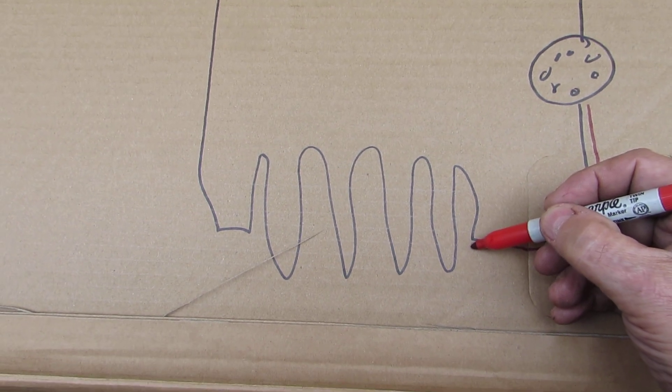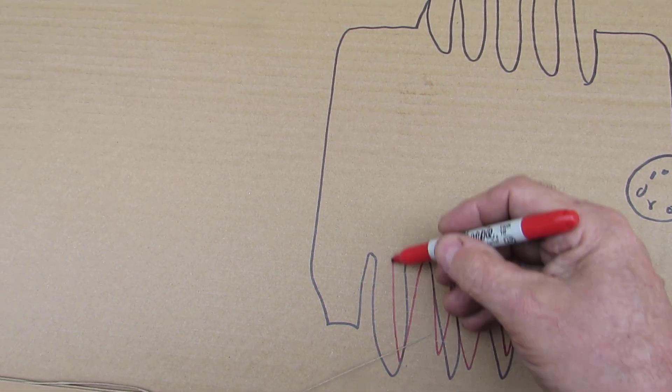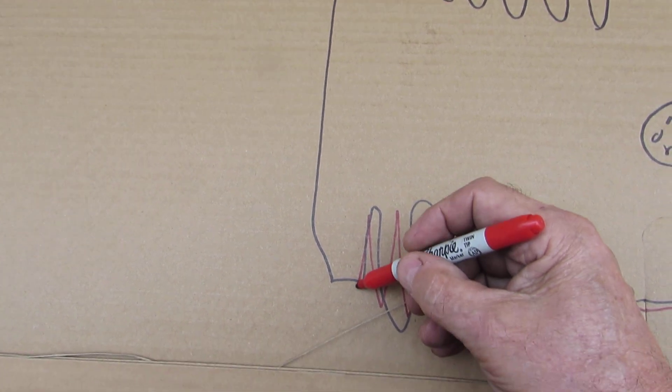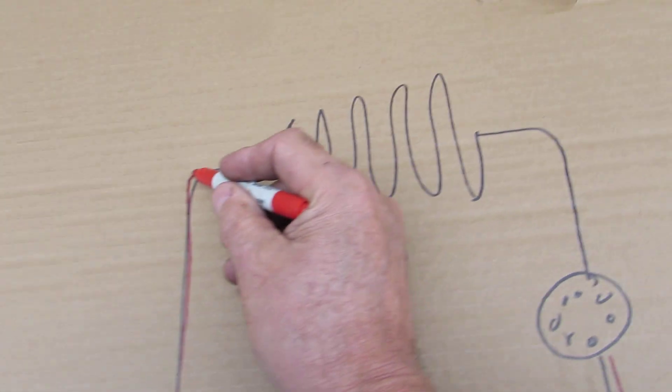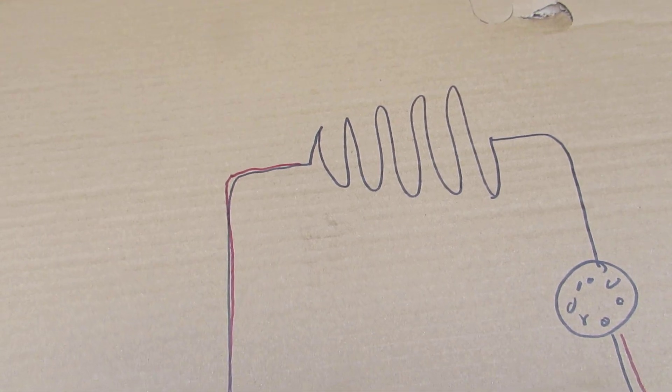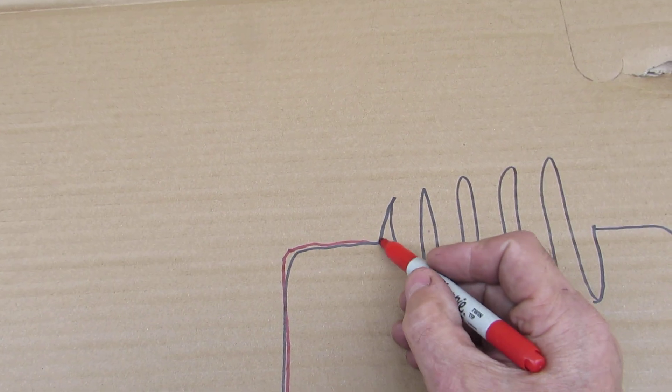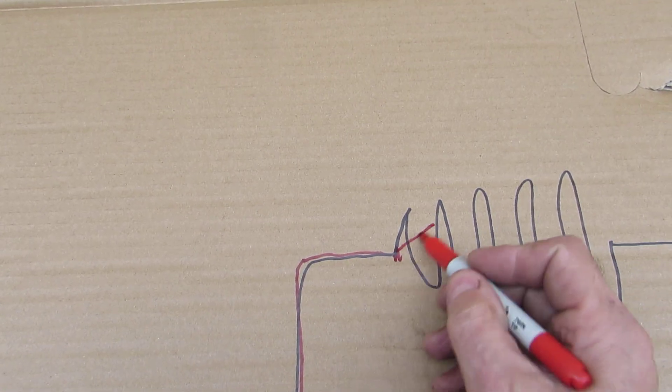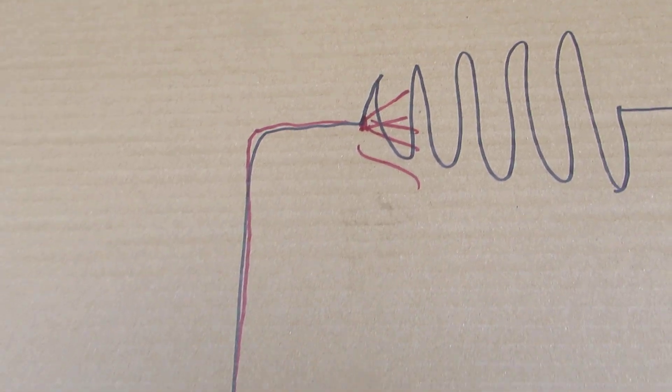a condenser coil. This condenser coil cools the fluid to liquid form, and then it travels up into what we call an evaporator coil. The evaporator coil has a small orifice that allows the fluid to expand, and